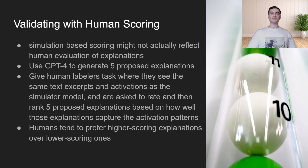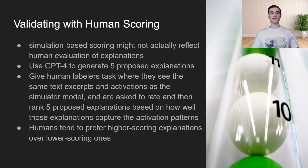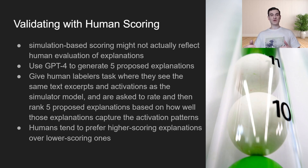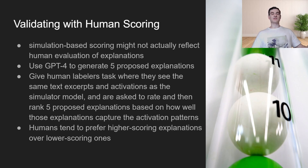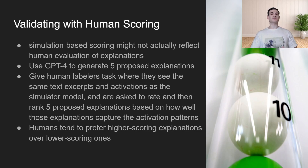One potential issue with having GPT-4 generate a natural language hypothesis and then simulate the activations is that this completely removes the human from the loop. So how do we know that the GPT-4 explanation is actually human understandable? One way to test this is to have GPT-4 come up with five different proposed explanations for a particular neuron's activation, and then give human labelers a task where they see the same text excerpts and activations, and are asked to rate and rank those five explanations. What they found is that humans do tend to prefer the higher-scoring explanations over the lower-scoring ones.